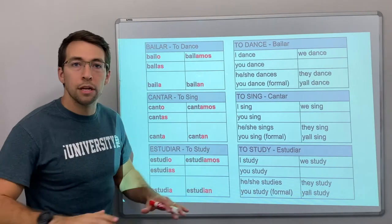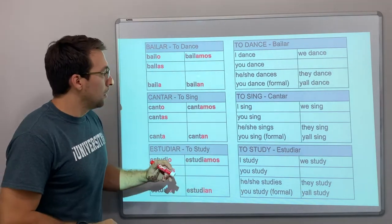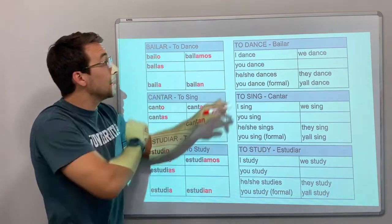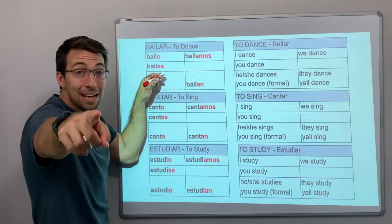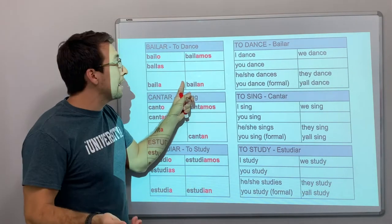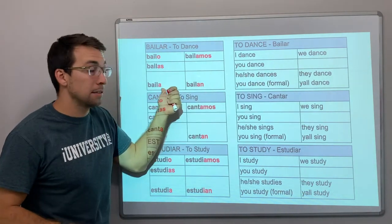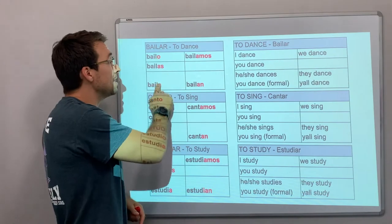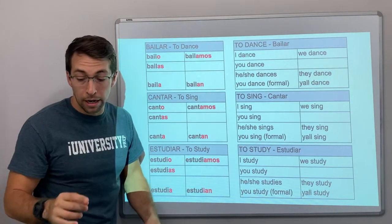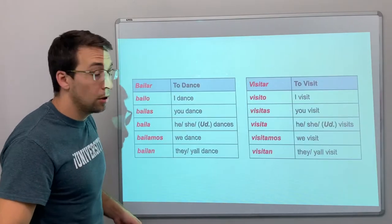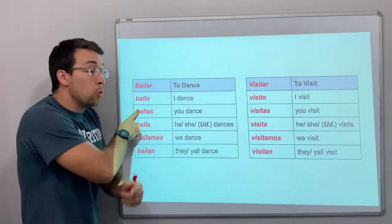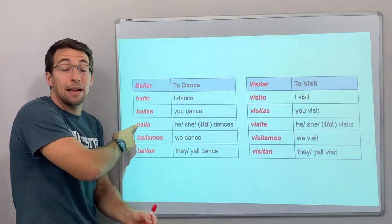We're talking about just typical things or standard statements. Notice: bailo means I dance, bailas means you dance, and baila — ella baila — she dances, or he dances. These endings communicate who is doing the action of the verb. You can also say yo bailo, tú bailas, ella baila — adding the subject pronoun before the verb.